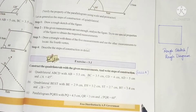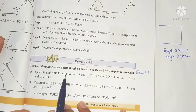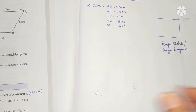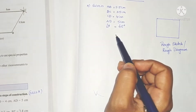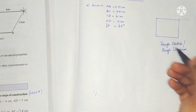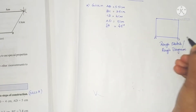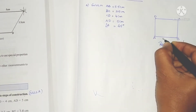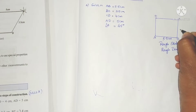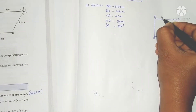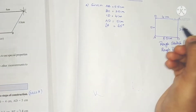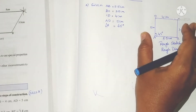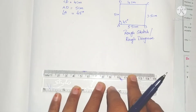We will see the first question: quadrilateral ABCD. After reading the problem, write the given measurements. Draw a rough sketch and label the vertices A, B, C, D in order. The measurements are AB = 5.5cm, BC = 3.5cm, CD = 4cm, AD = 5cm, and angle A = 45 degrees.